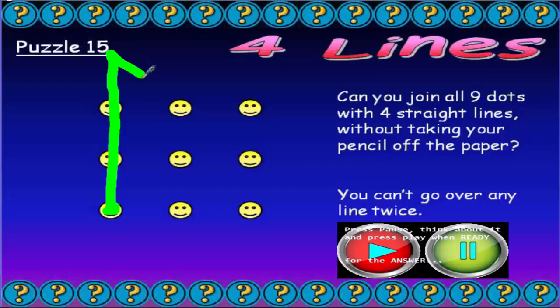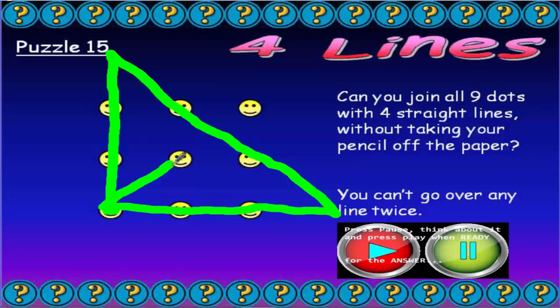Now we're going to go diagonally through these two dots. Again, keep going outside the grid, think outside the box. At the moment we've only drawn two lines. The third line is going to come back along here, so that's three lines and we're nearly there. The fourth line is going to go up and diagonally through those two dots.